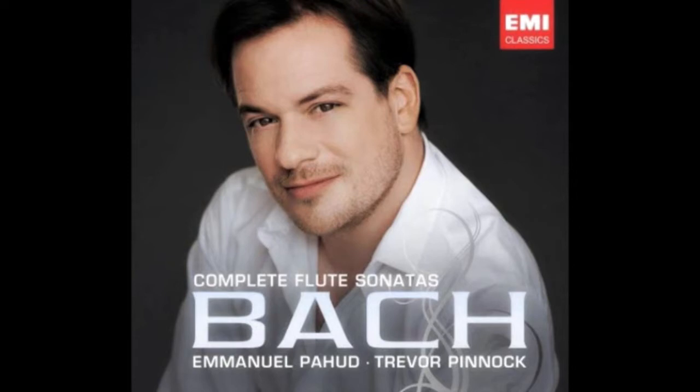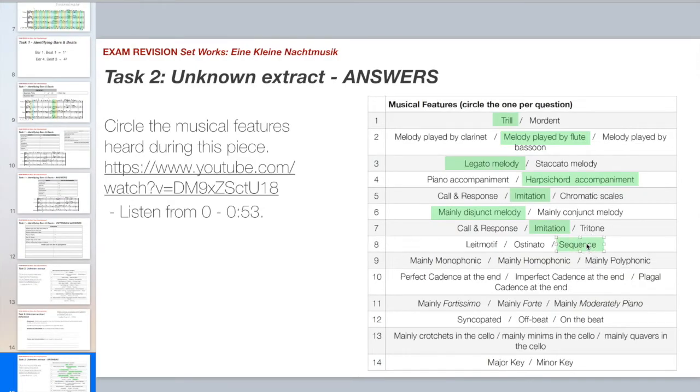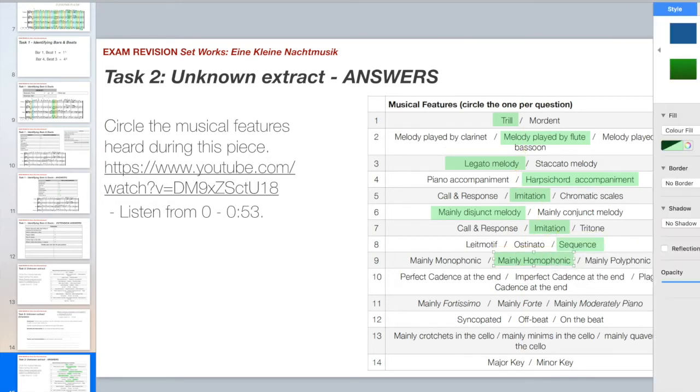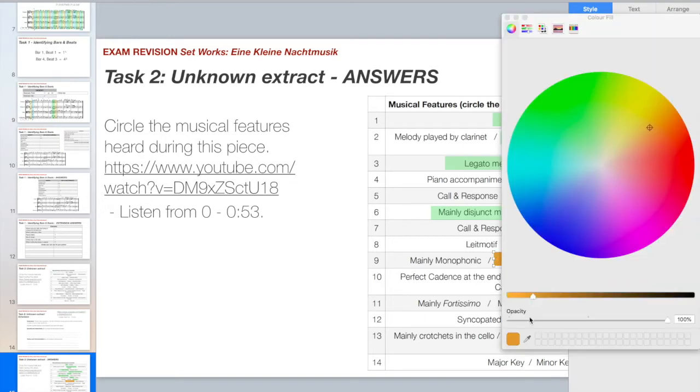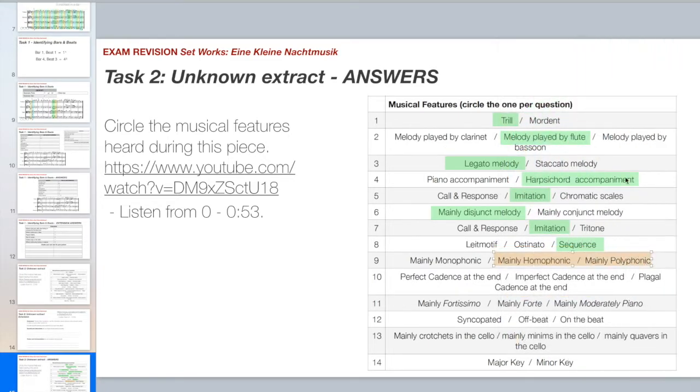Here's our sequence, a descending sequence in the cello. So that was our sequence that we just heard. Is it mainly monophonic, mainly homophonic and mainly polyphonic? Well it's a bit difficult this one because it does start off homophonic and then it does have that polyphonic section where there's imitation in. So I think I'm going to go mainly homophonic but I'm going to change the colour here just to show you that actually it's a bit of a trick question because it's kind of got quite a polyphonic section partway through.